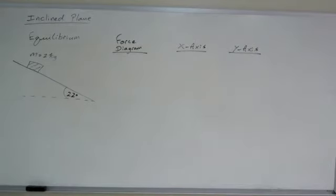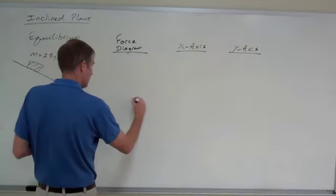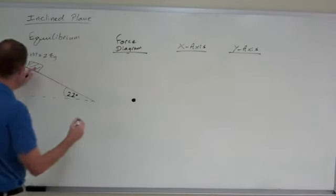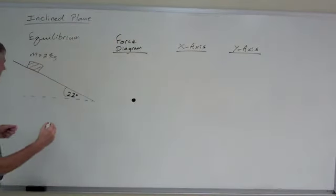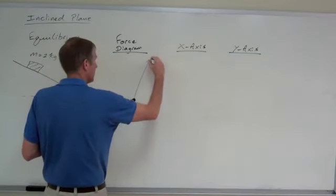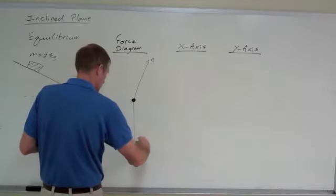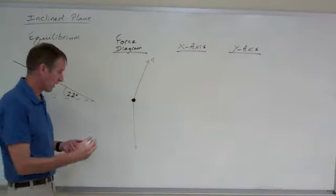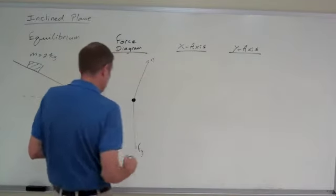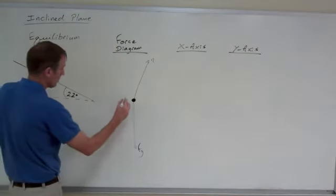The first thing to do is to draw the force diagram. Make a dot to represent the object. The normal force is perpendicular to the ramp. The weight, I'm going to use FG for force of gravity, is straight down towards the center of the earth.